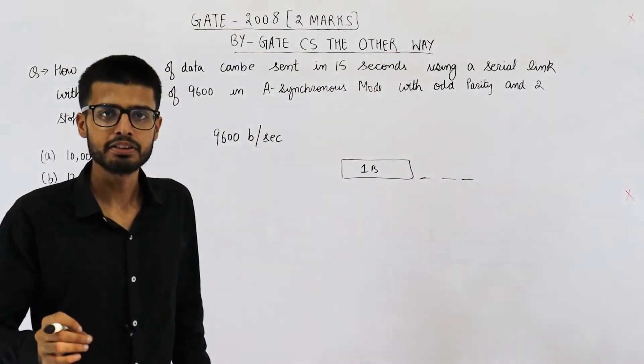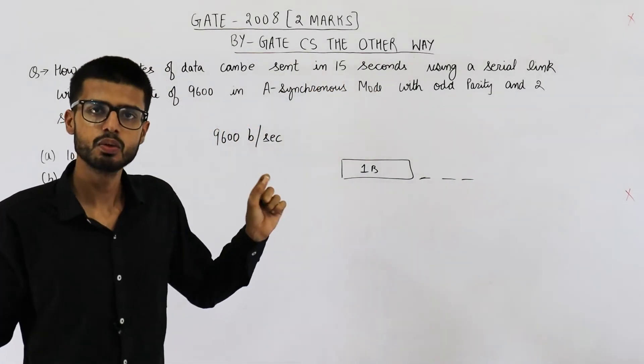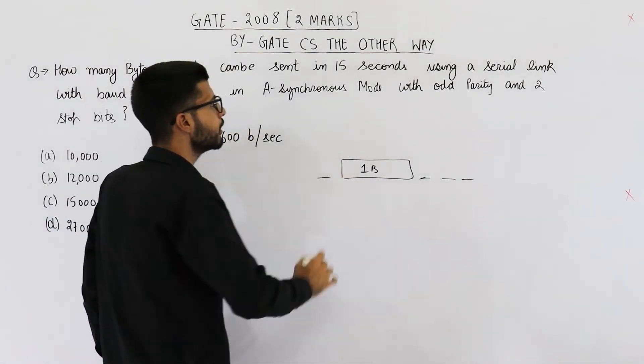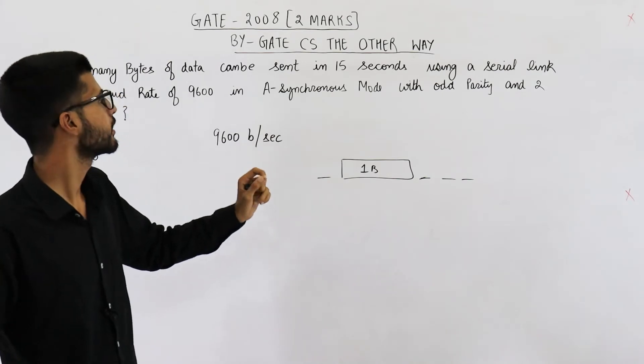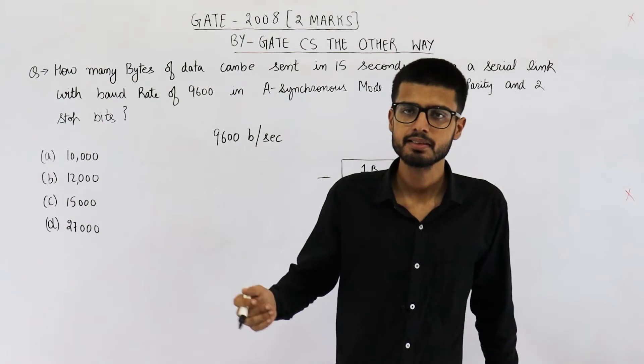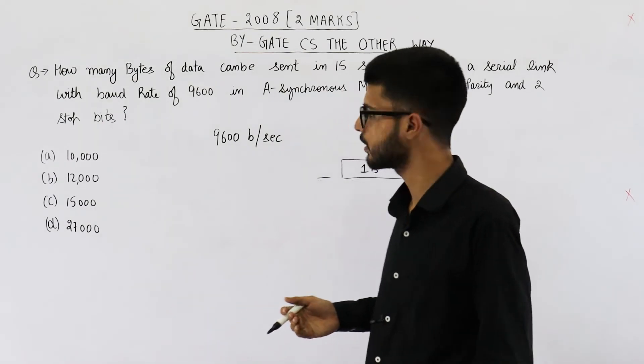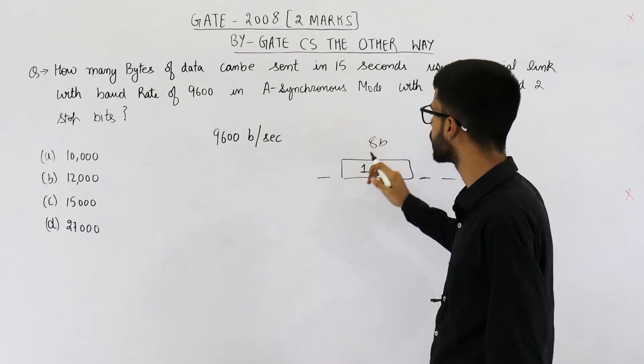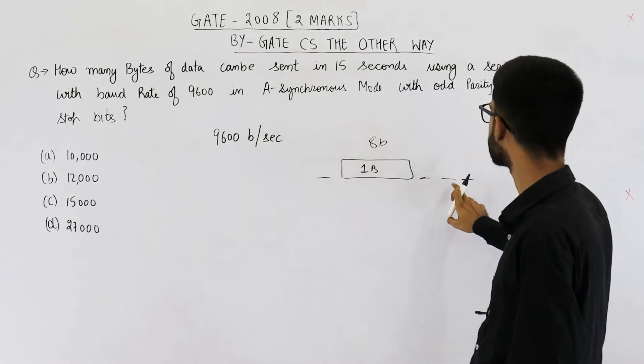Now, even if they are not mentioning that start bit is used, you will assume it by yourself that there is one start bit, because in serial link and asynchronous mode, start and stop bits are necessary. That is the only way we can synchronize the data. So for every eight bits of data, we are adding one, two, three, four.